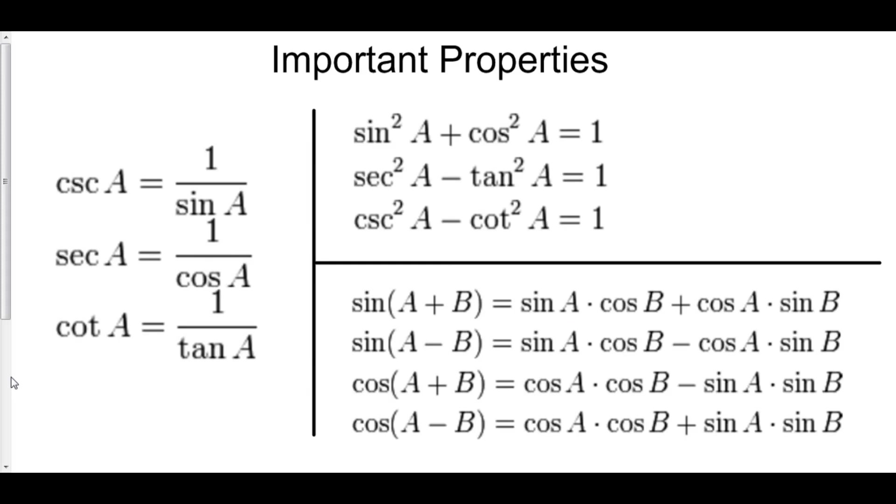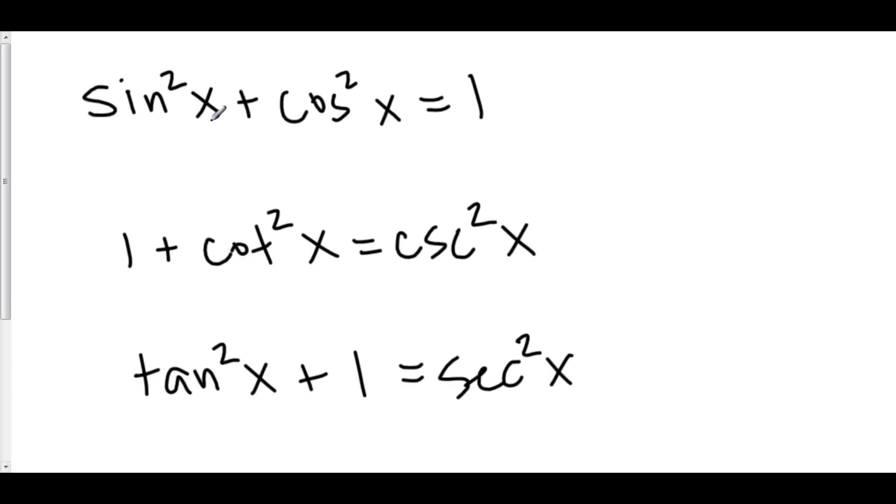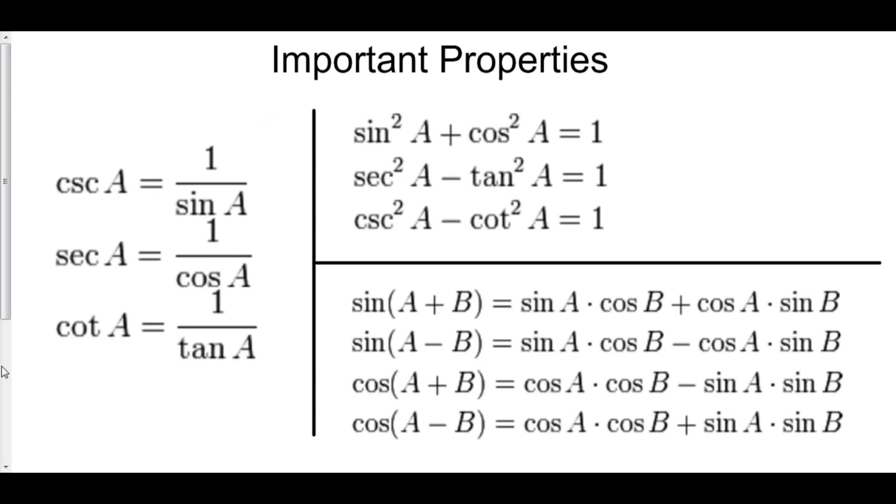And likewise, we also have secant squared minus tan squared equals 1. So all you have to do to get the other two is just divide by sine squared or cosine squared, depending on what you need. So if you memorize sine squared plus cosine squared equals 1, the basic Pythagorean identity, then the other two follow.